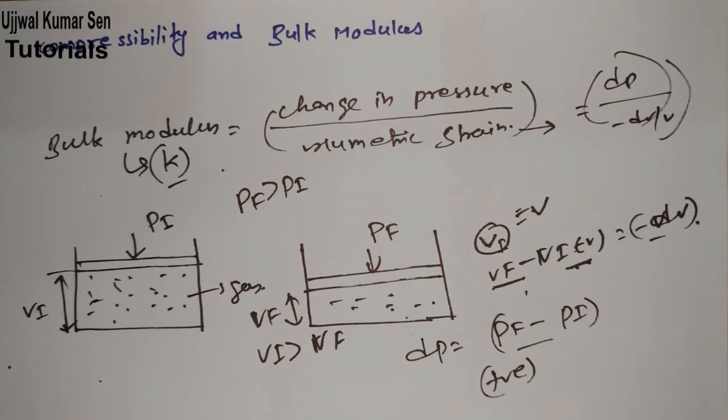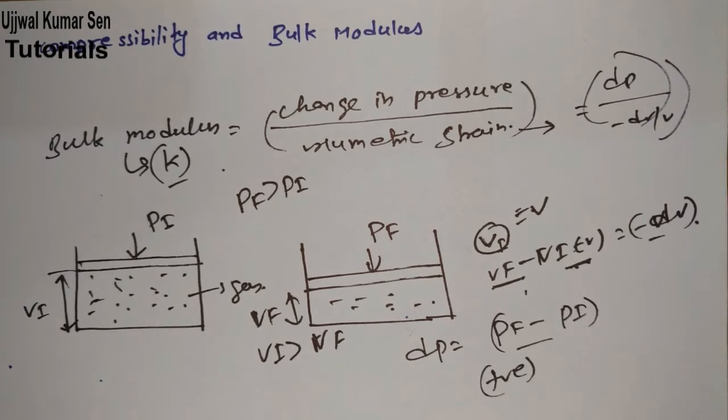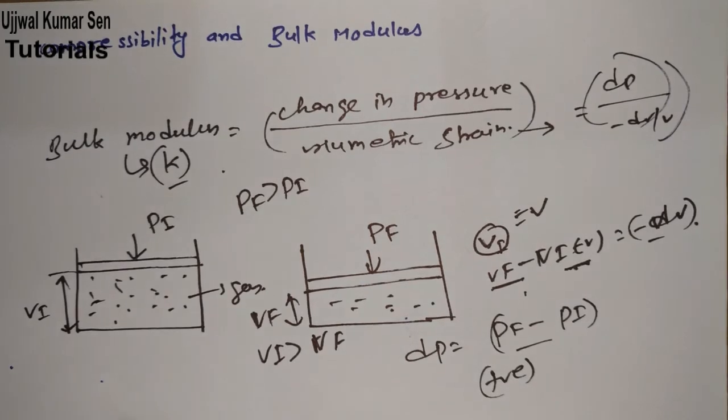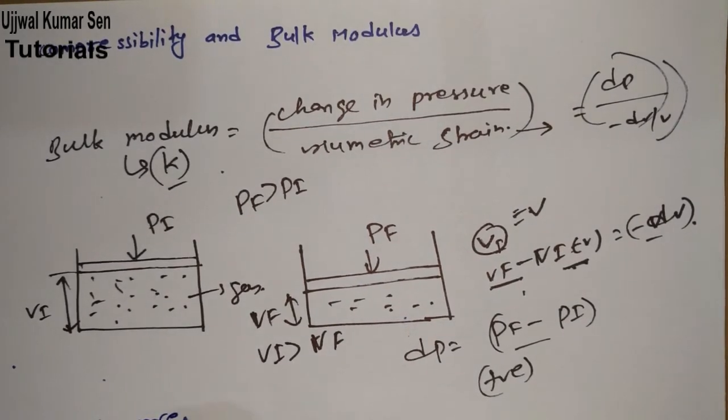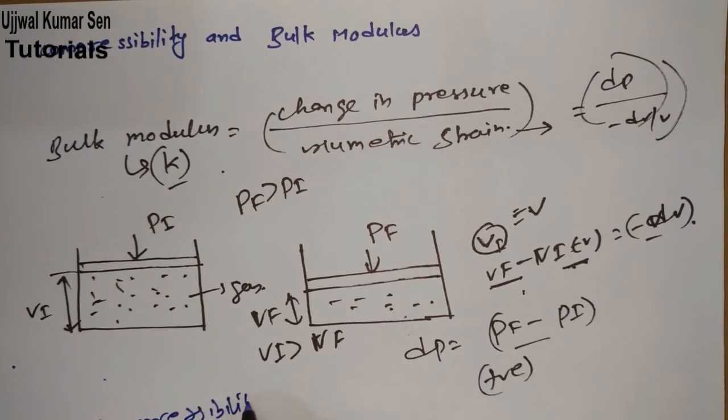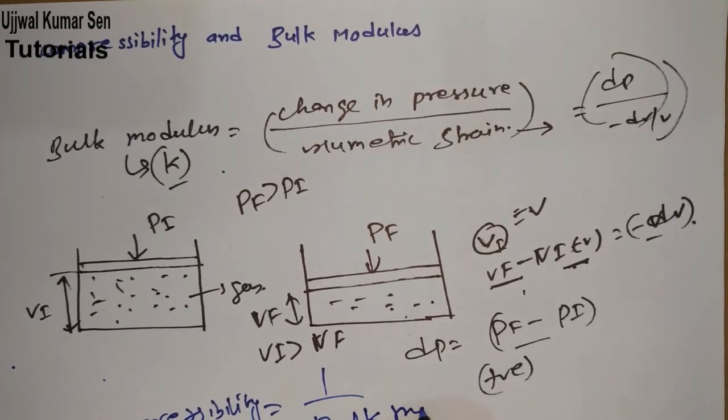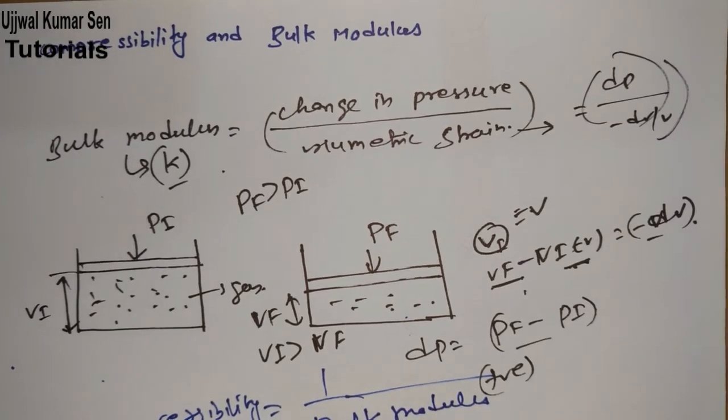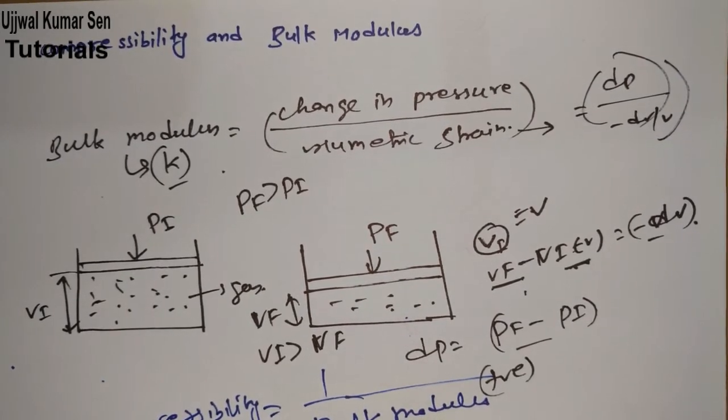Now come to the next term, that is compressibility. There is an awesome relation between both terms. Actually, compressibility is equal to one upon bulk modulus, so it is a reciprocal thing. We can write it like this: dV by V upon dP is known as compressibility.